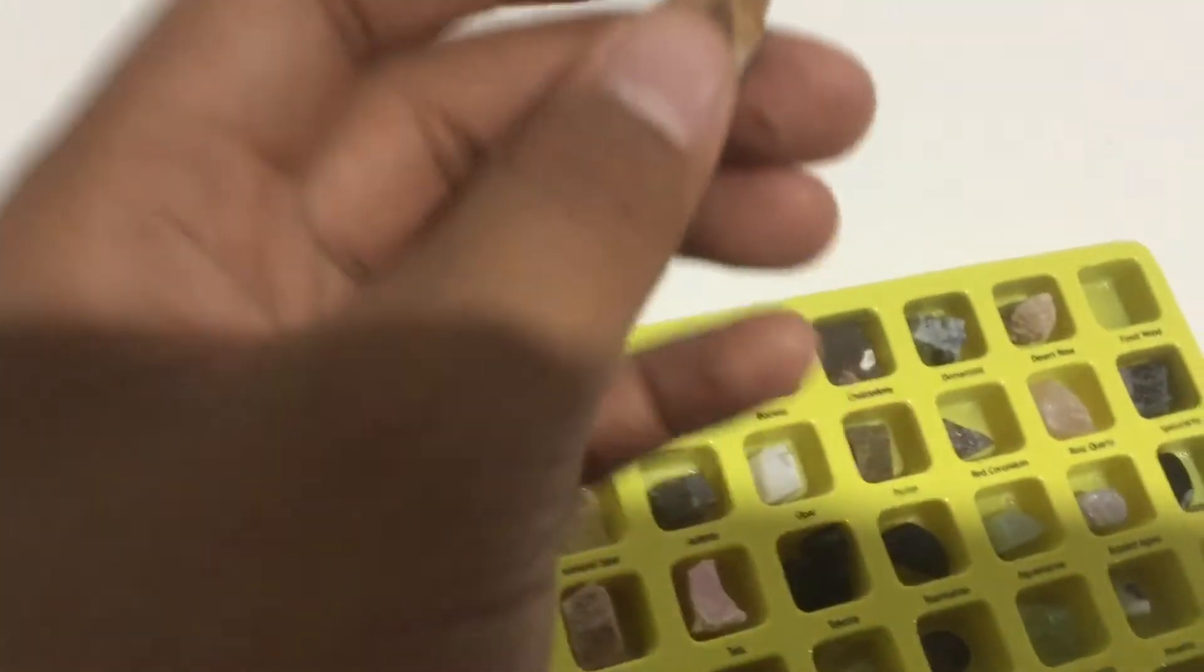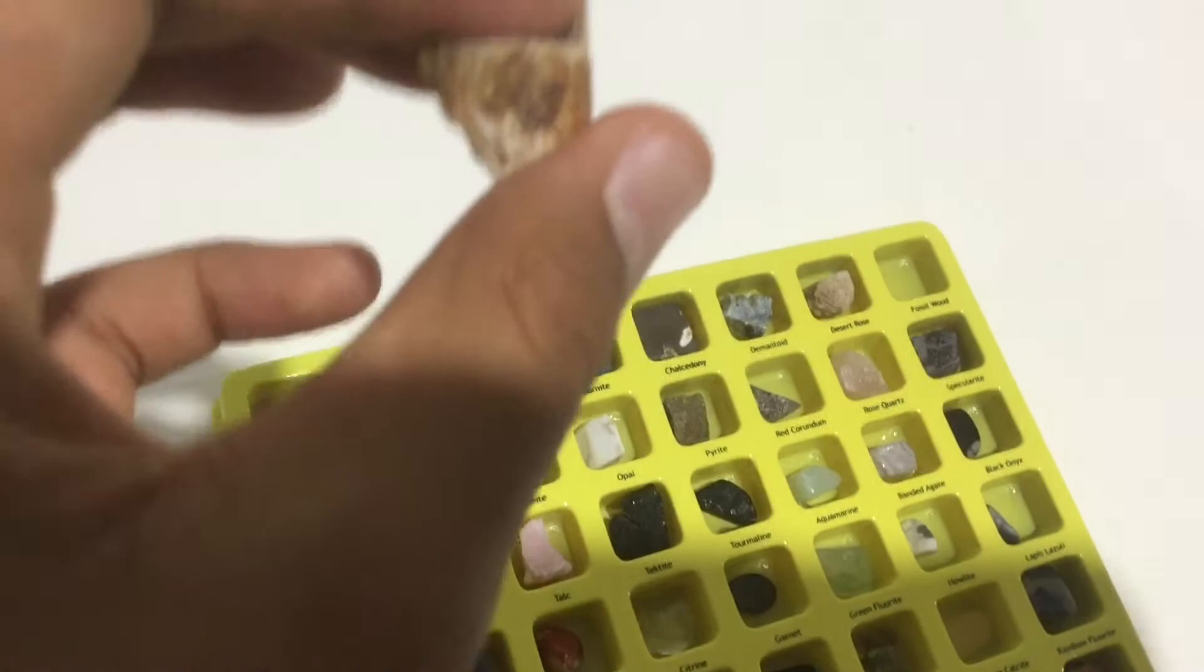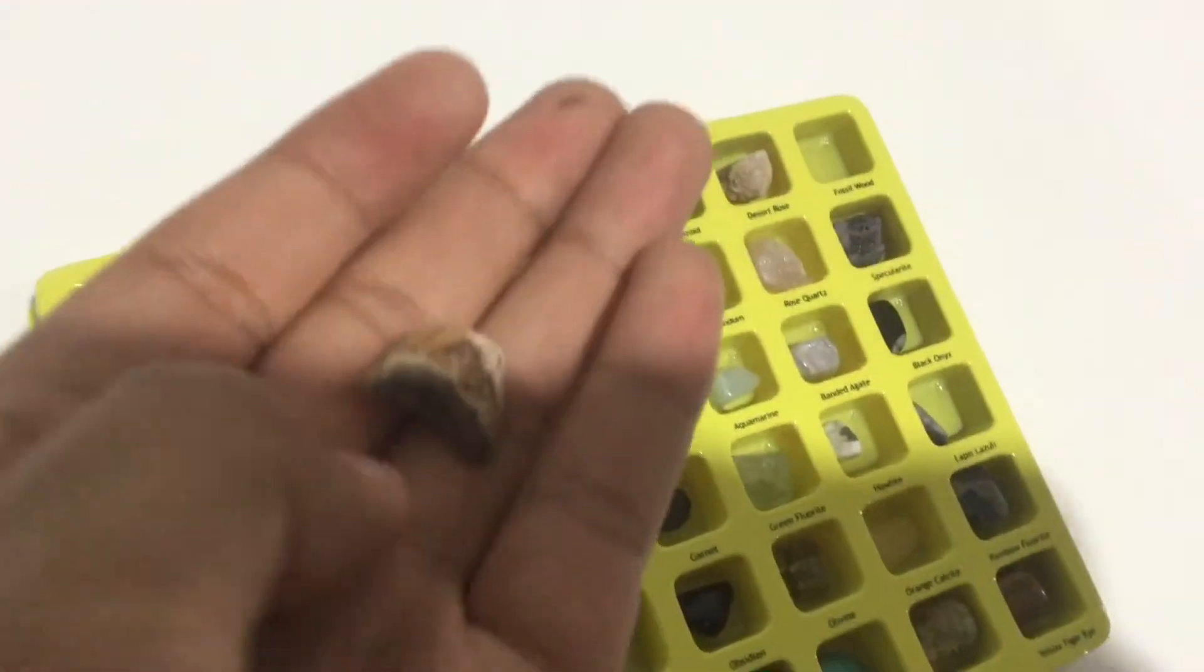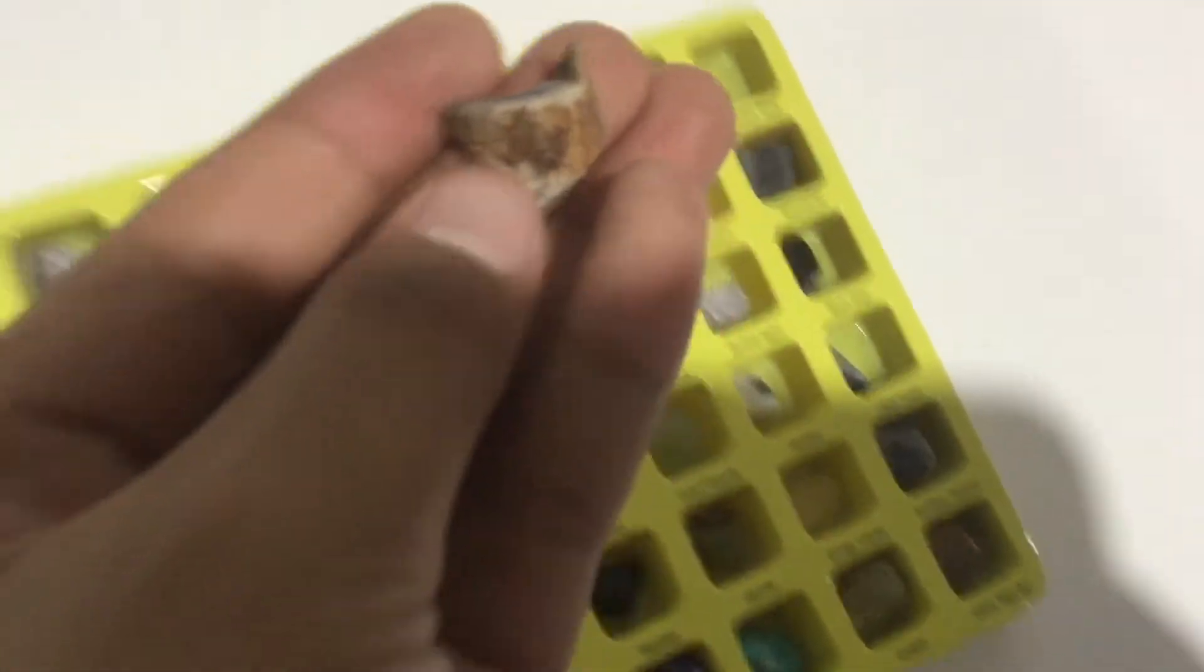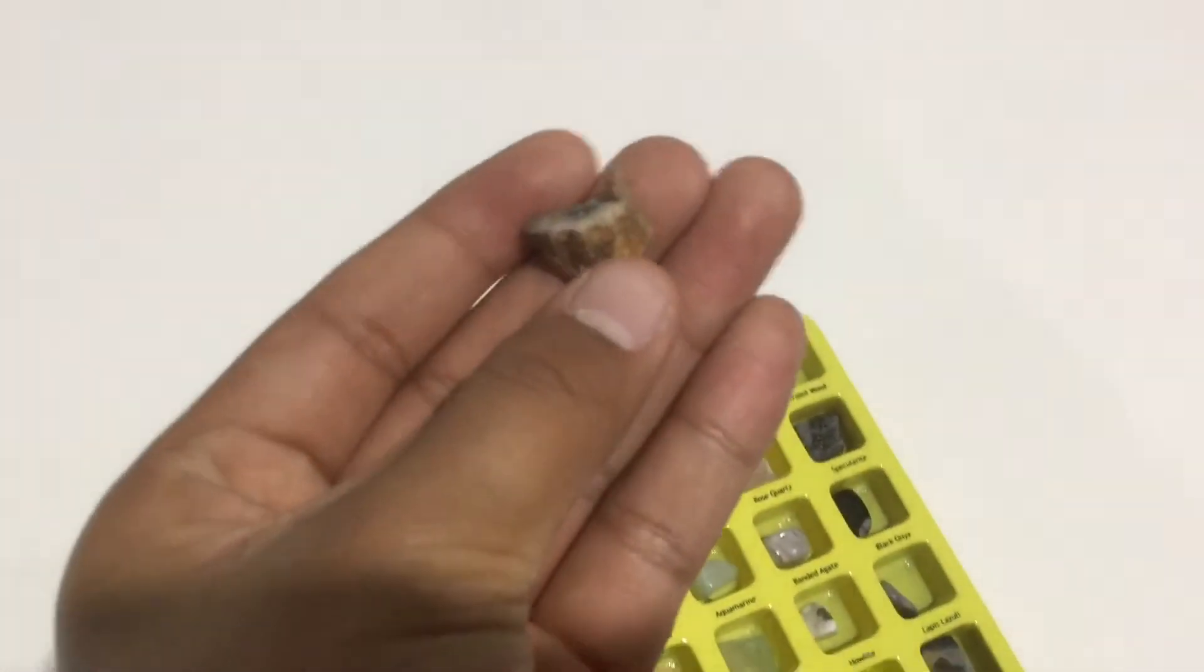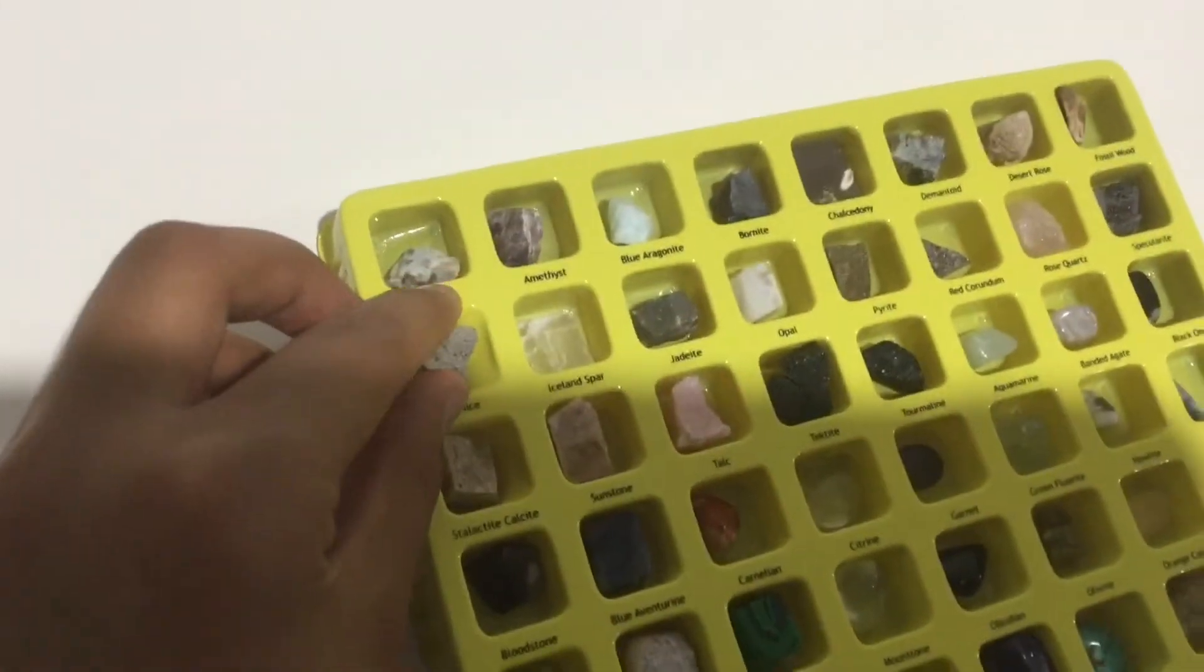This one is fossil wood. Sometimes it's called, I forgot what it's called, but there's like another name for it. It's cool. It looks like normal bark from a tree. Oh yeah, I remember the name now. It's called petrified wood.